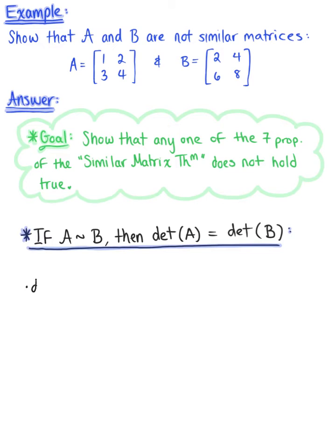So here we go, let's compute the determinant of matrix A. We have 1 times 4 minus 2 times 3, which leaves us with 4 minus 6. So the determinant of A is negative 2.